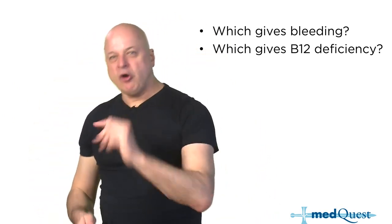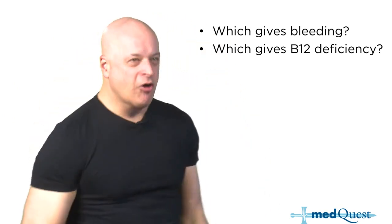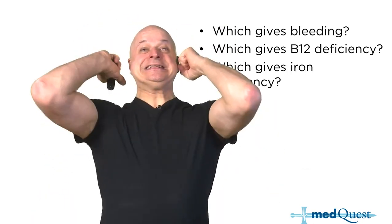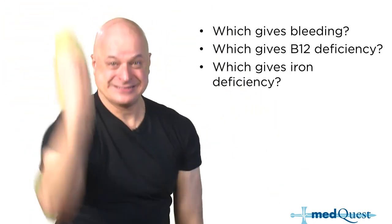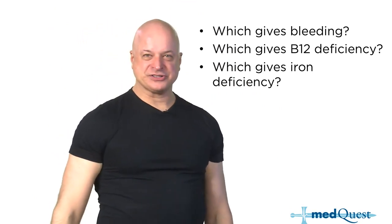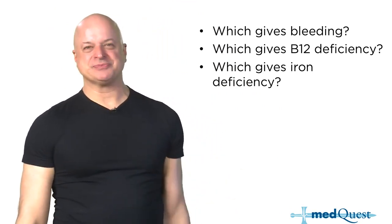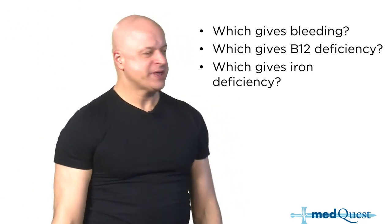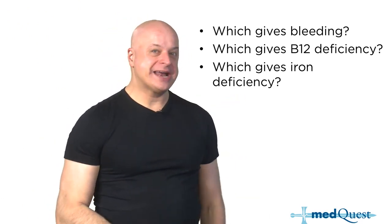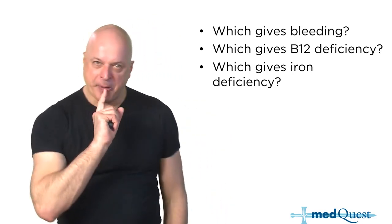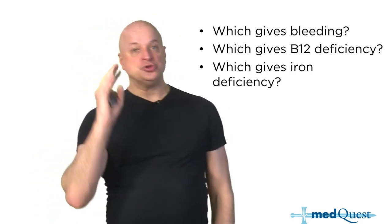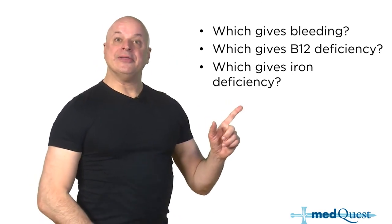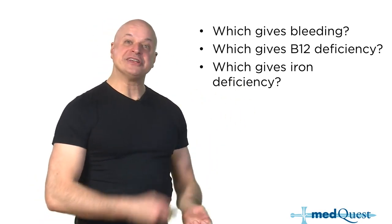They all give steatorrhea — oily, greasy, floating, frothy, foul-smelling stool — because fat ferments in the colon. They all give a positive Sudan black, the fat stain of stool. They all give floating stools, weight loss, B12 loss, bleeding, and bone and eye problems through malabsorption of vitamins A, D, E, and K. But which one gives iron deficiency? Not chronic pancreatitis — celiac disease, mostly. You don't need pancreatic enzymes to absorb iron, and that's how you tell them apart.